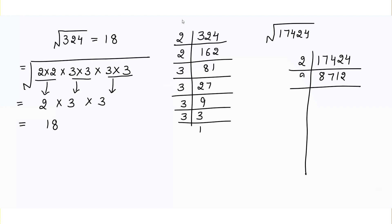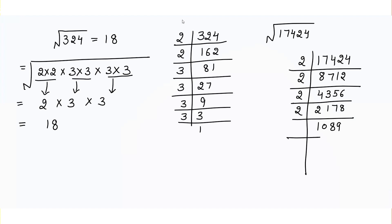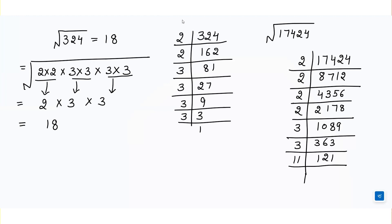Again it is divisible by 2, so dividing gives 4,356. Dividing by 2 again gives 2,178. Then dividing by 3 gives 726, and dividing by 3 again gives 121. Now 121 is a perfect square of 11, so it is divisible by 11. Dividing by 11 gives 11, and dividing 11 by 11 gives 1.